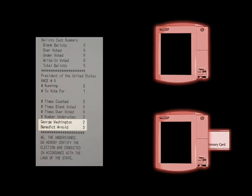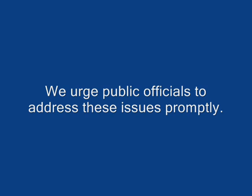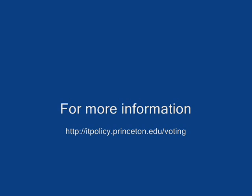These problems, taken together, pose a very serious threat to the security of elections conducted on Diebold AccuVote TS voting machines. We urge public officials to address these issues promptly. More details, including a full technical paper containing a more complete security analysis and a discussion of mitigation strategies, can be found on our website at itpolicy.princeton.edu/voting.